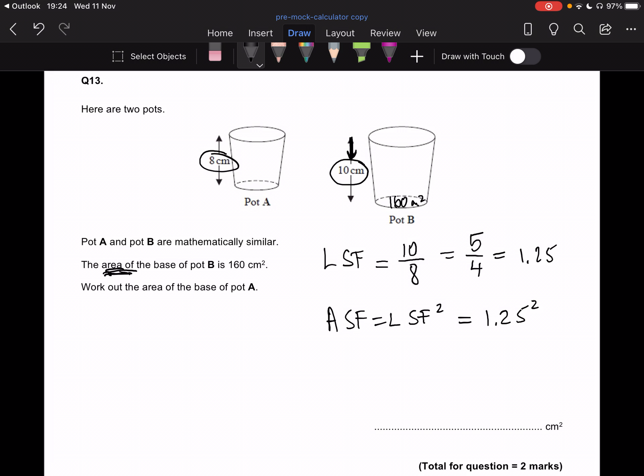So what we want to do now is we're going from the area of the base of the big pot to the area of the base of the small pot. This means that we're going to be dividing by our scale factor. So that's a division. If we were going from the small pot to the big pot, then we'd be multiplying by the scale factor. But we're not.